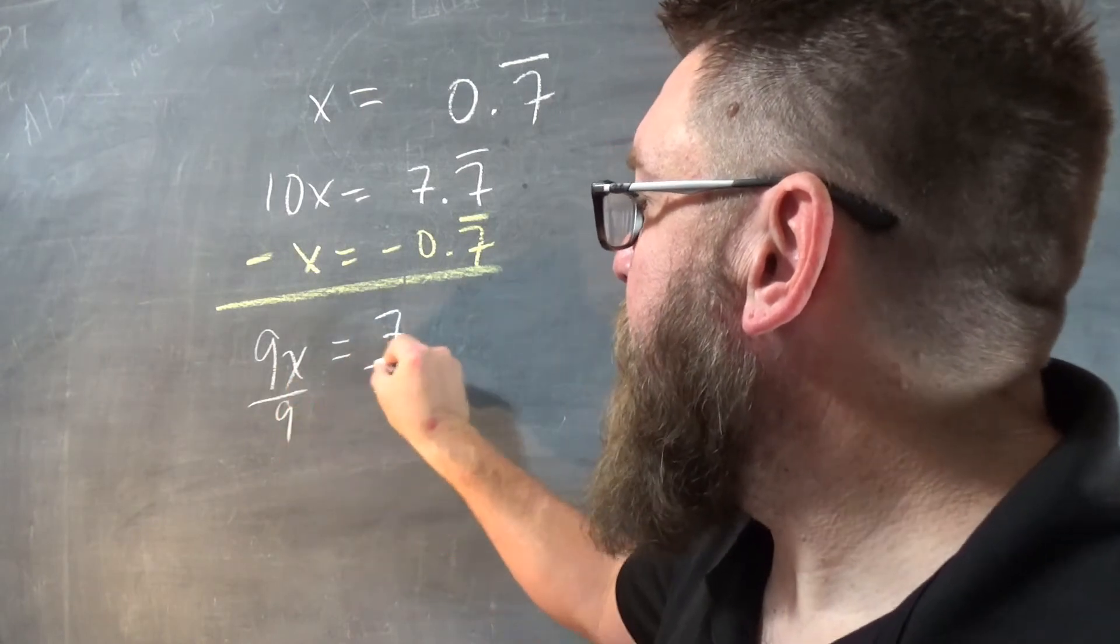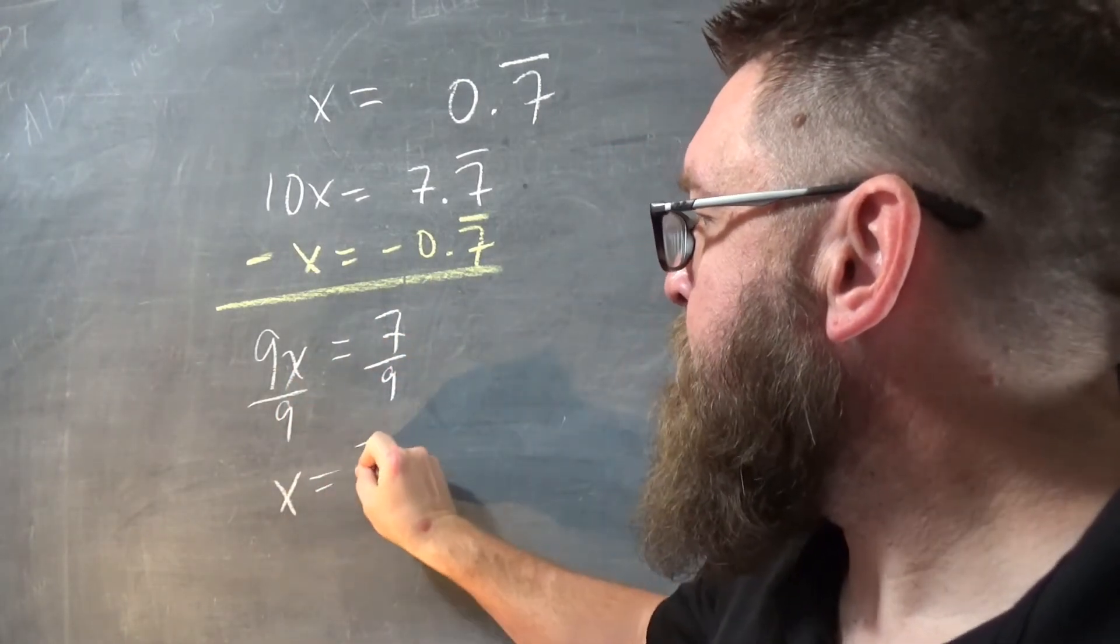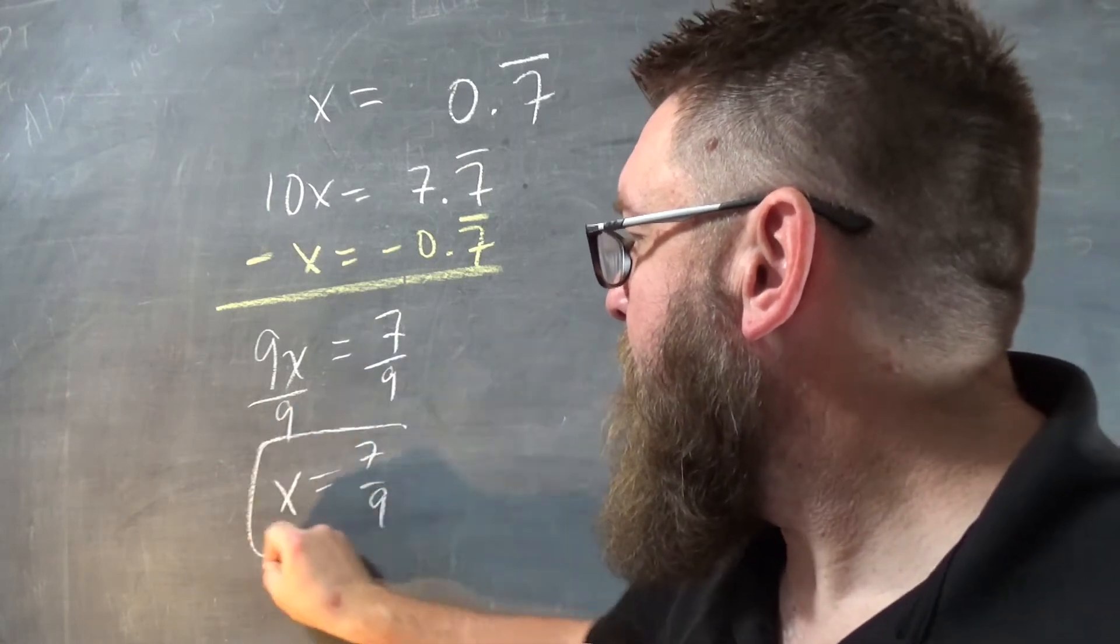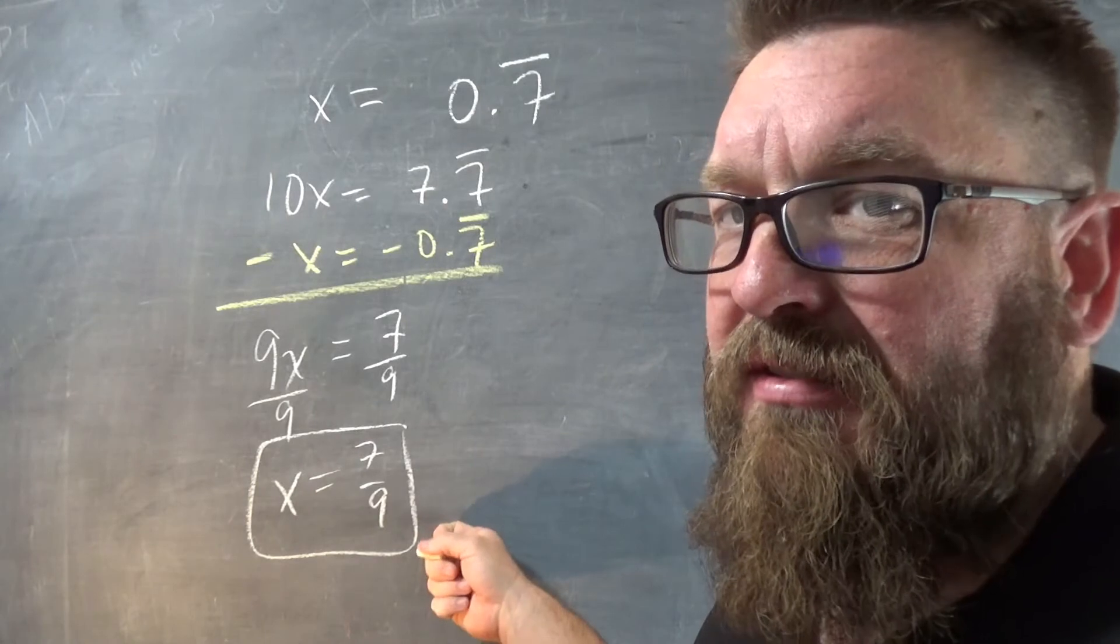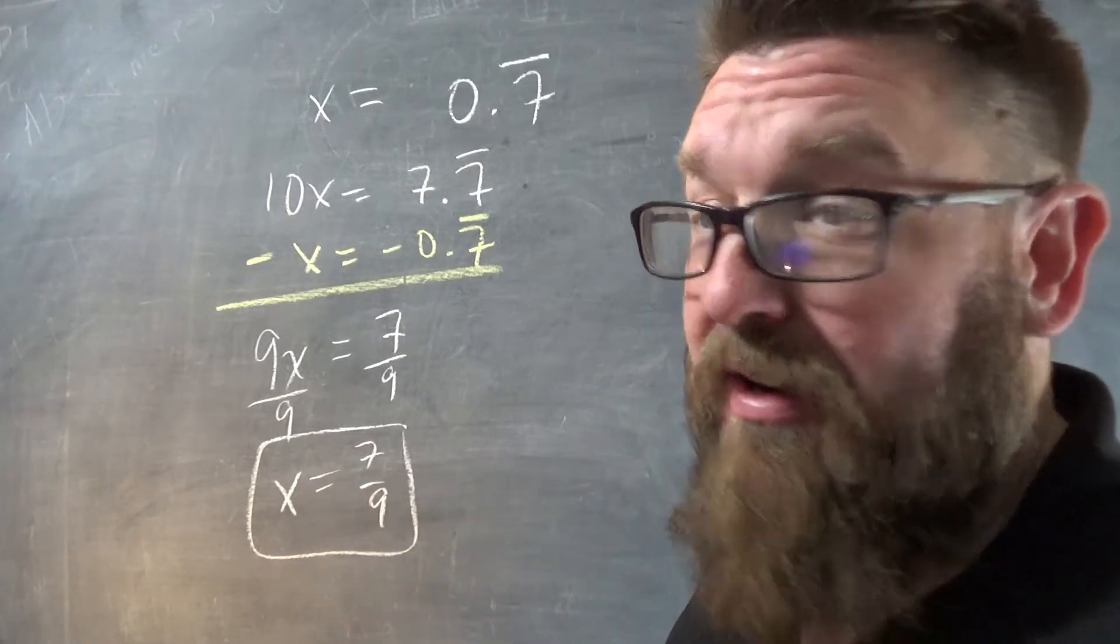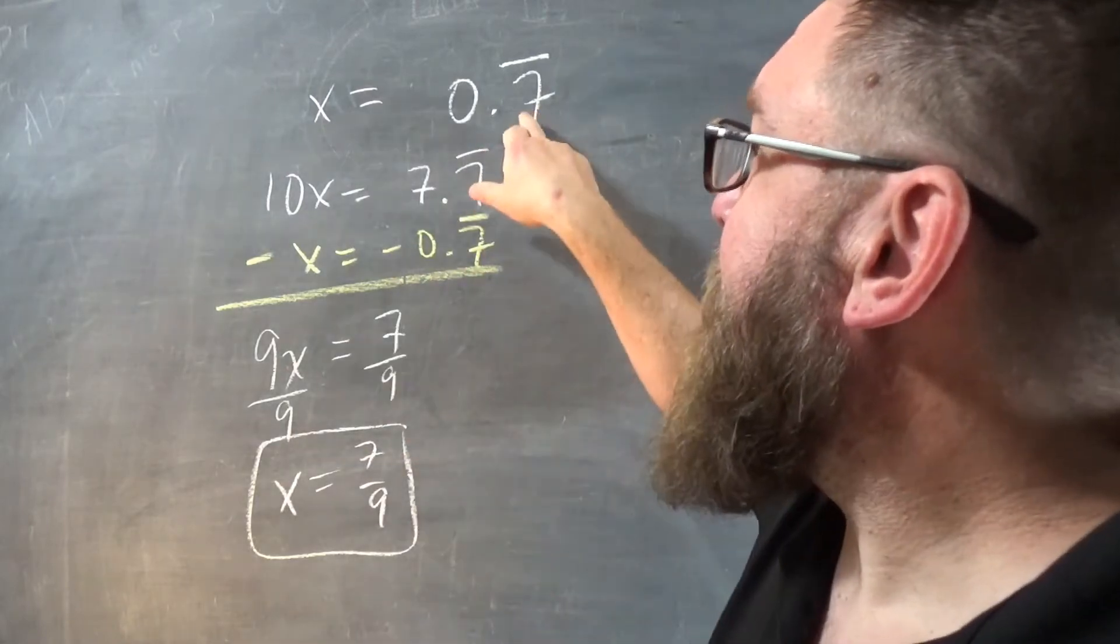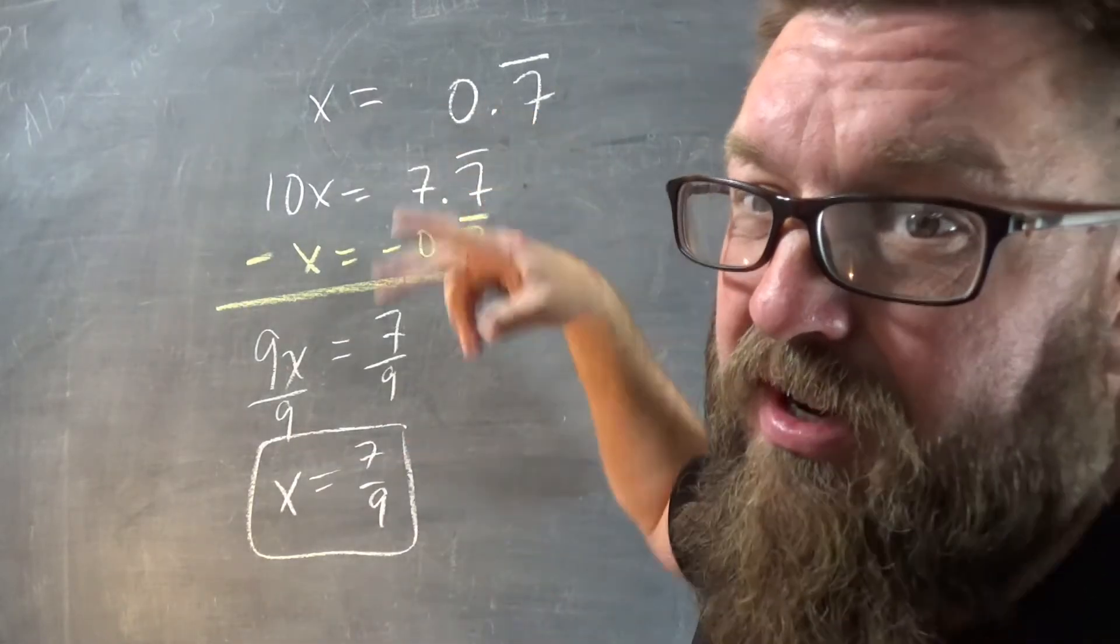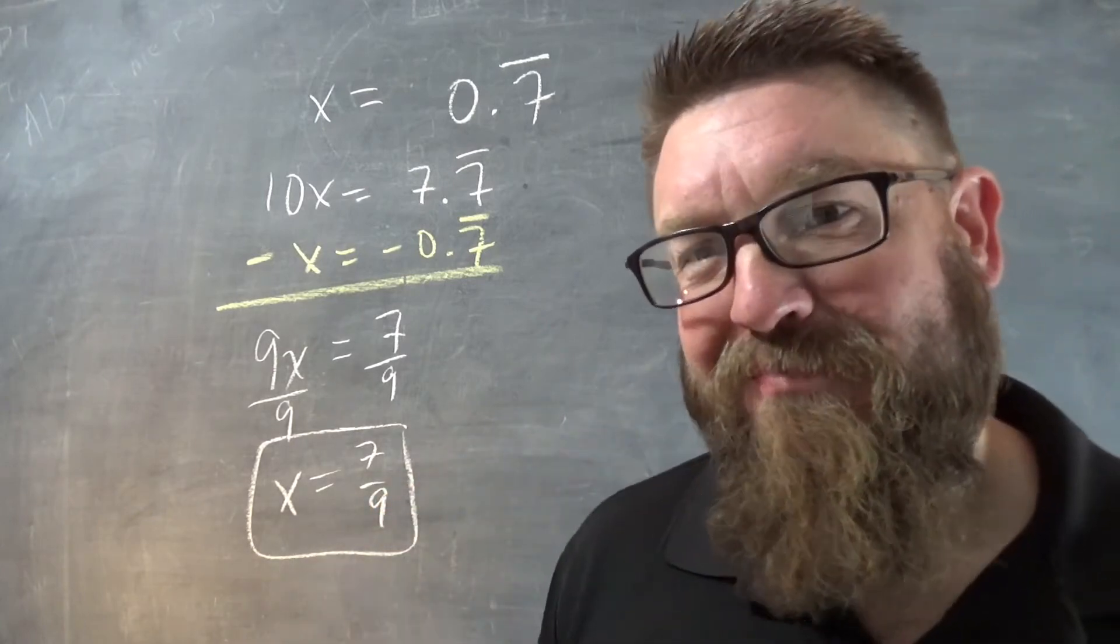9 times what equals 7? Well, use inverse operations. Divide both sides by 9. Done. So this is the fraction whose decimal approximation is 0.7 repeating. And one thing to note, this is an approximation. It keeps going forever and ever, but this is accurate. It's exact. It's perfect. Just like you. It's perfect.